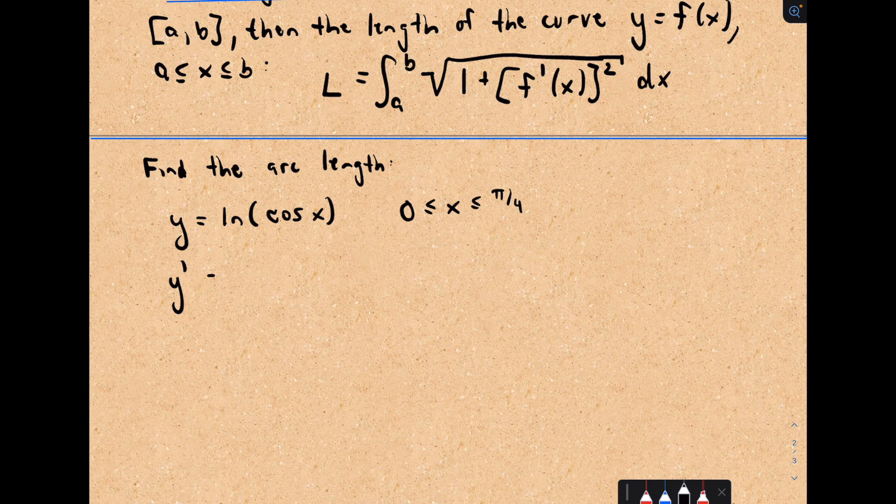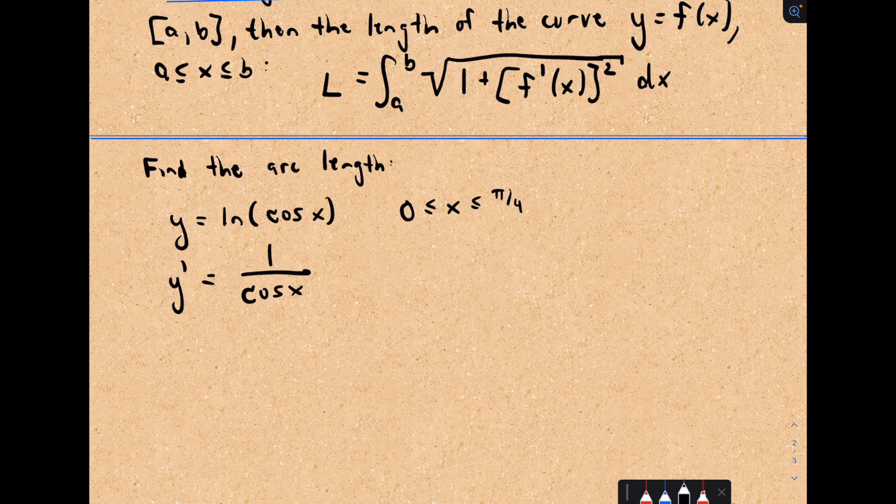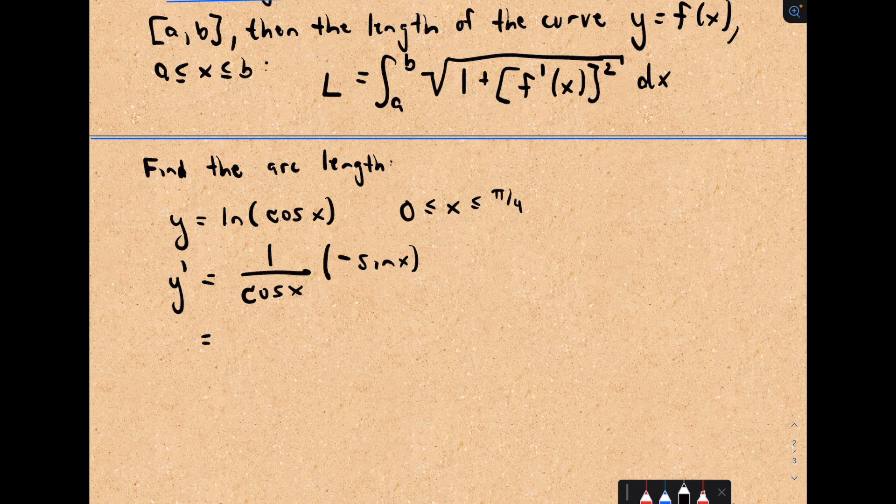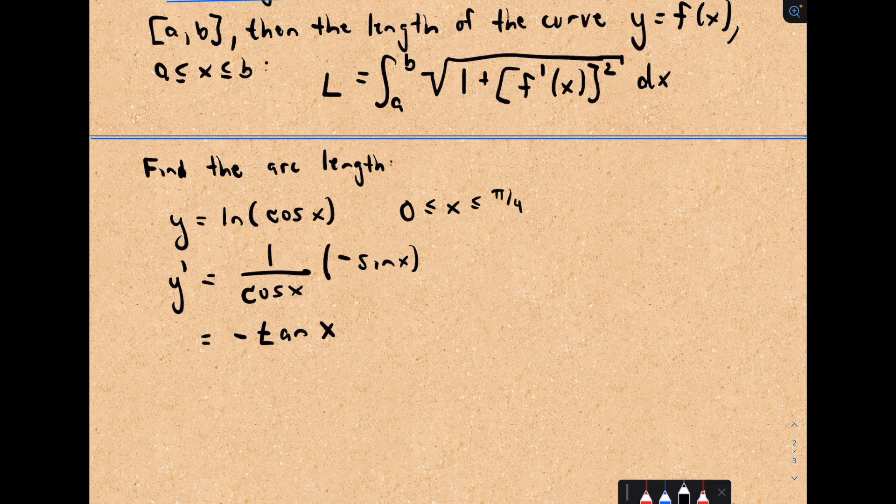So we've got y prime. I have to use the chain rule. The derivative of ln of cosine of x, I'll get 1 over cosine of x, and then I multiply by the derivative, which is negative sine x. That's negative sine over cosine. Sine over cosine is tangent, so this will be negative tangent of x. So far so good.